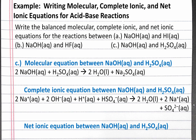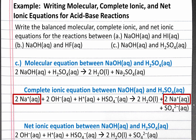Our last step is to write the net ionic equation by eliminating our spectator ions. Our only spectator ions are the two sodium plus ions. So everything that's left is 2 OH⁻ plus H⁺ plus HSO₄⁻ produces 2 H₂O plus SO₄²⁻. And these are our molecular, complete ionic, and net ionic equations for the reaction between sodium hydroxide and sulfuric acid.